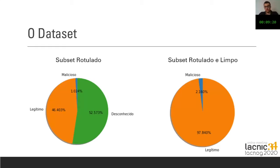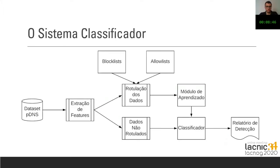The data set was provided to us and we used part of it. After cleaning, we realized that we had 46% of the subset that was legitimate and 52% was unknown — not related to the block list or the allow list. So this was not conclusive. We therefore tried to use that unknown base to work on a labeled subset with 97.8% of legitimate domains and only 2% of malicious domains.